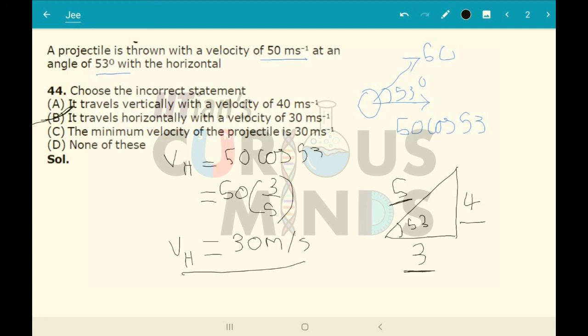If you see option A, it travels vertically with a velocity of 50 meter per second, which is not correct. Initially the velocity will be equal to 40 meter per second, but the velocity will go on decreasing and after the maximum point it will again go on increasing.